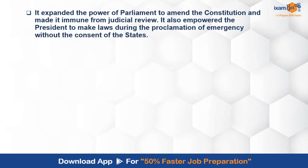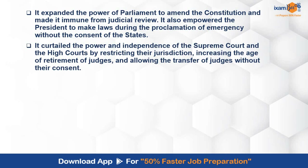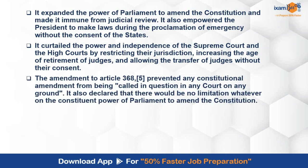Coming to the core area, it expanded the power of the parliament — specifically, the power to amend the constitution and make it immune from judicial review. Judicial review is a very important part of the constitution, and this is how we can keep a check on the actions of the legislature as well as the executive. But judicial review was curtailed by this particular amendment. The president was also empowered to make laws during the proclamation of emergency without the consent of the states. It also curtailed the power and independence of the Supreme Court and High Courts. There was a restriction on the judges — their retirement age was increased, and their jurisdiction and transfers without their consent were placed in the hands of the government.